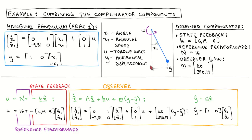The plant model we use for this example is the familiar frictionless pendulum with a length of one meter and a tip mass of one kilogram. The input is torque U. There are two states: the pendulum angle and the angular velocity. The horizontal displacement of the pendulum tip is the measured output Y. When the pendulum is linearized at an angle of zero, we get the model shown in blue.